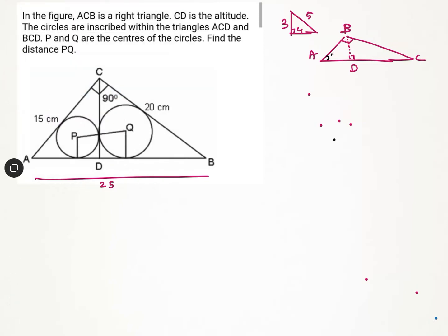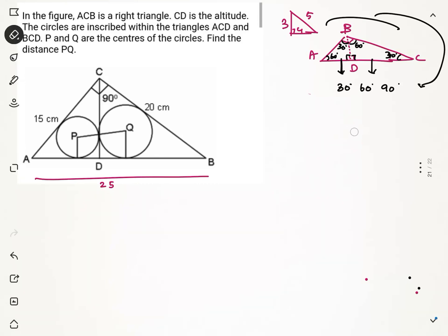Let us assume triangle ABC has angles 90, 60, and 30 degrees. Looking at the left side triangle, angle A is 60, angle D is 90, therefore the third angle is 30 degrees. Similarly in the right side triangle, angle C is 30, angle D is 90, therefore the remaining angle is 60 degrees. So all three triangles have angles 60, 90, and 30 degrees, meaning all three triangles are similar triangles.